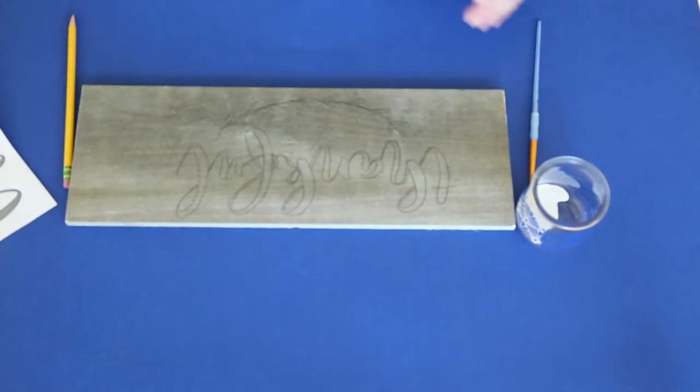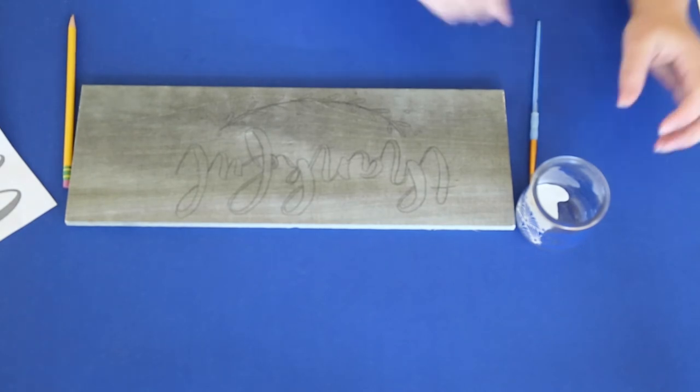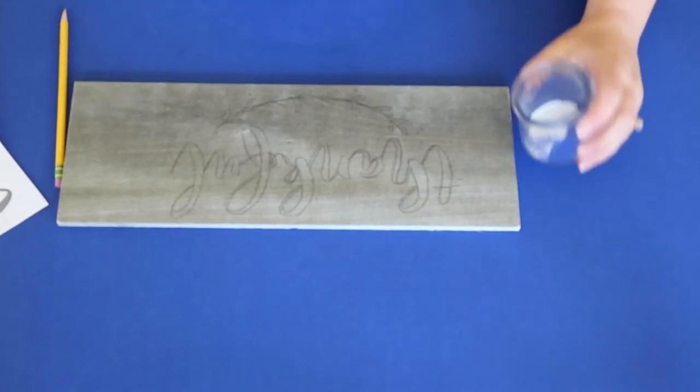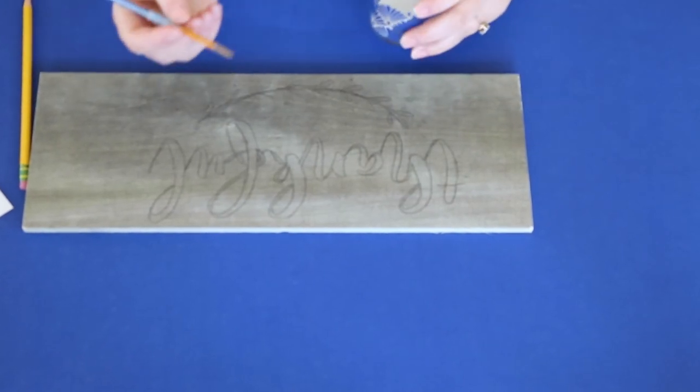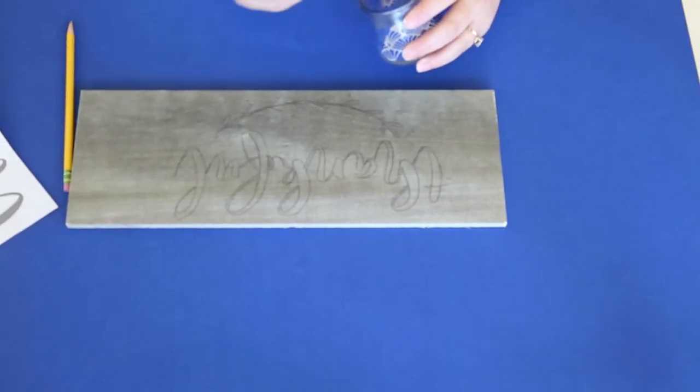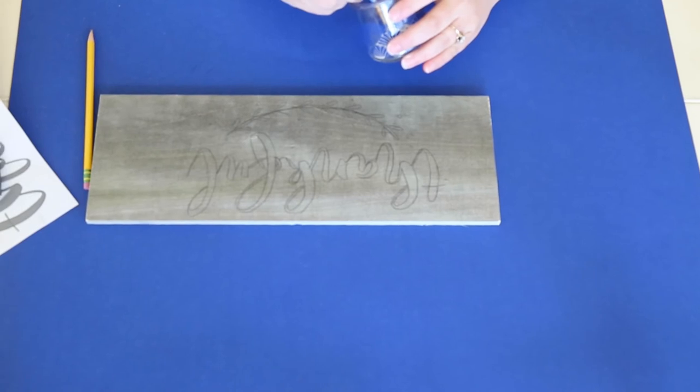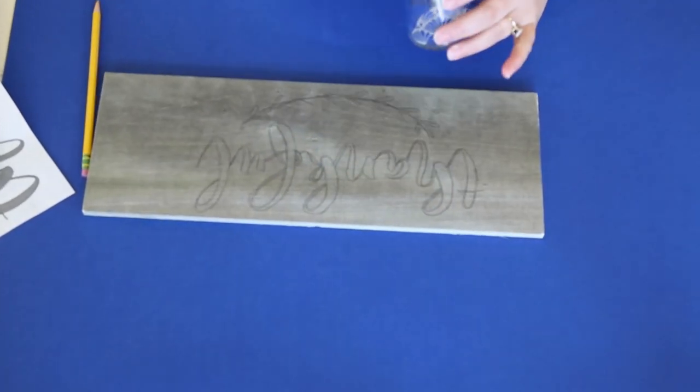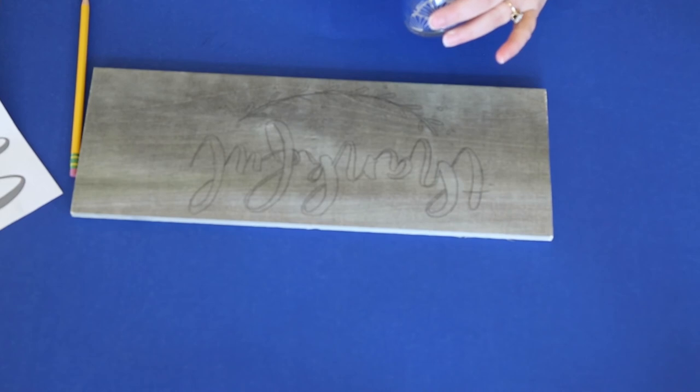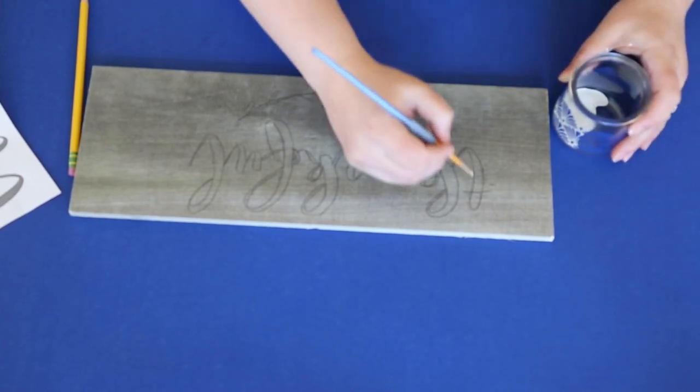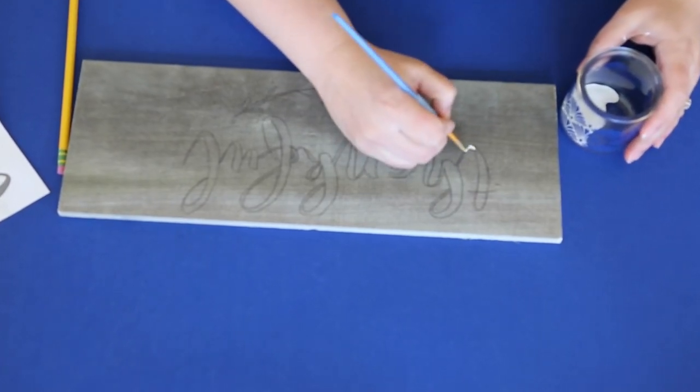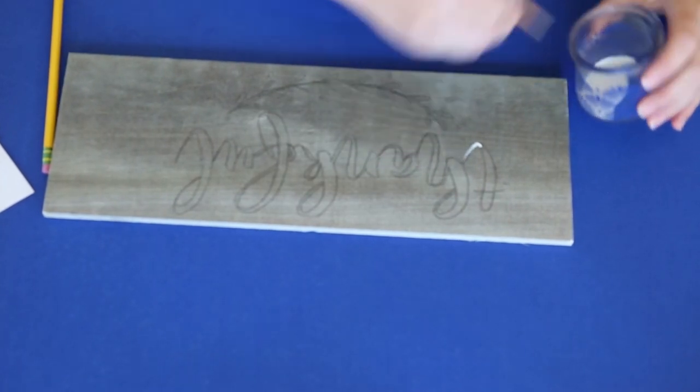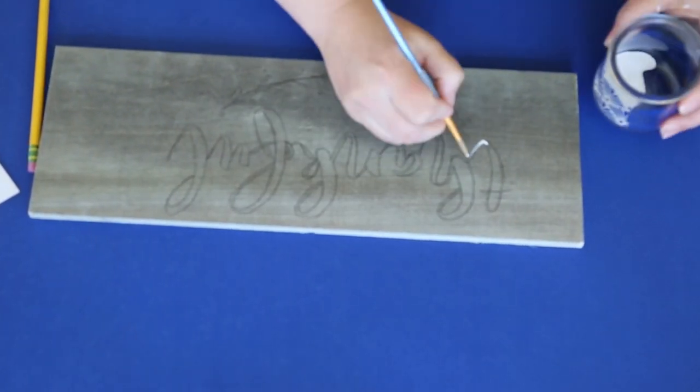So as you can see, we have our sign ready to go here and the next thing that you do then is just start painting. And you want to be really careful not to get too much paint on your paintbrush because if you get too much, then with some of these skinnier lines, it might be harder to stay in the lines. So I'm just going to start with a little bit and do some of the skinnier areas first before I get too much paint on my brush.